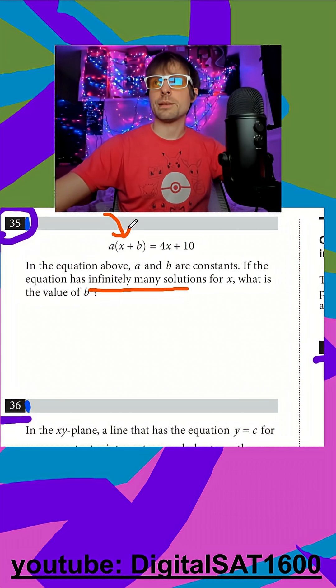First, I have to get them both in slope-intercept form. So I just distribute this, and I get ax plus ab.